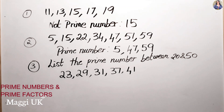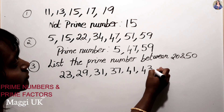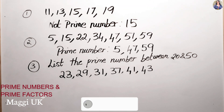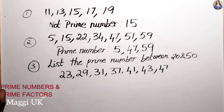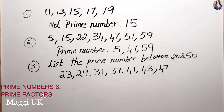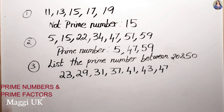After 41, the next prime is 43 — you can't find any other factors for 43. Then 44 is not prime, and 47 is a prime number. 49 is not prime. So the prime numbers between 20 and 50 are: 23, 29, 31, 37, 41, 43, and 47. You need to think through the numbers carefully to write them all down.